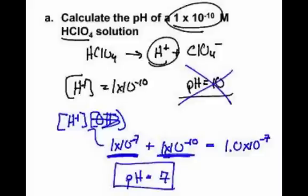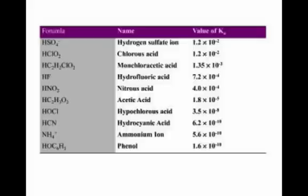It's actually 6.998 or something very, very small. But for significant digits we would say 7.0, because we want to keep one significant digit decimal after, as we talked about last time. Hey, now let's talk about weak acids and weak bases.